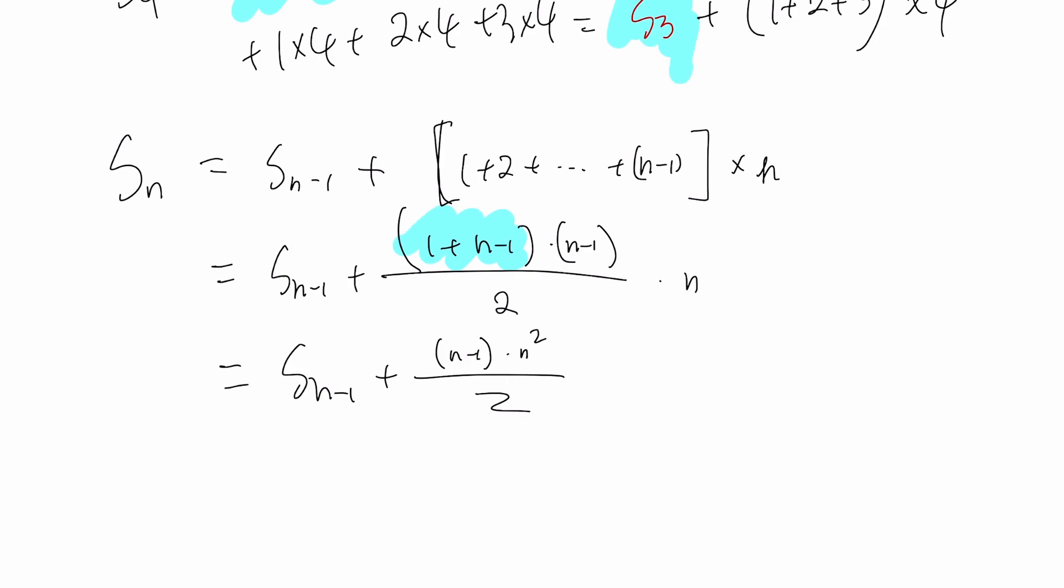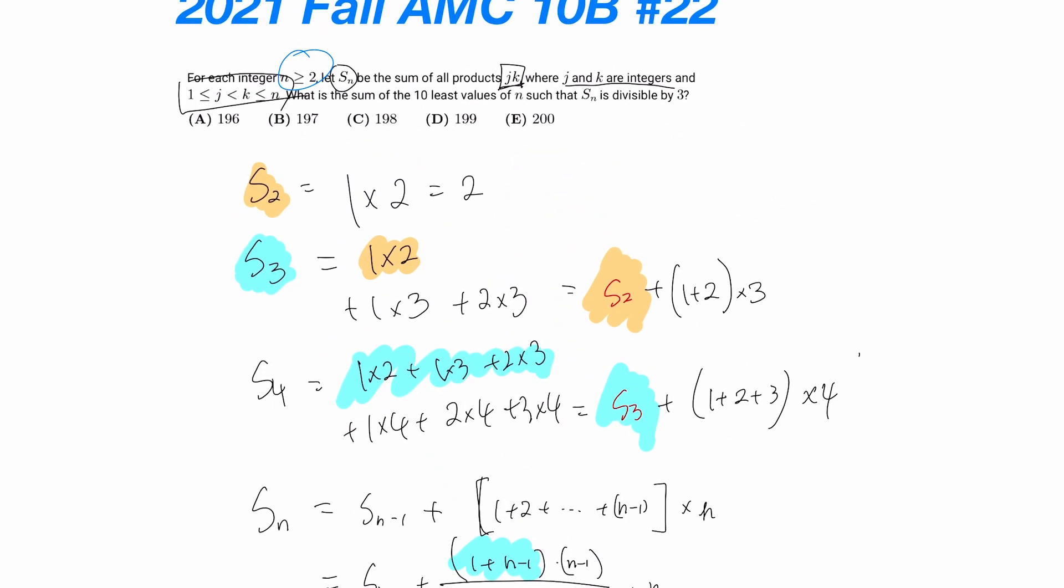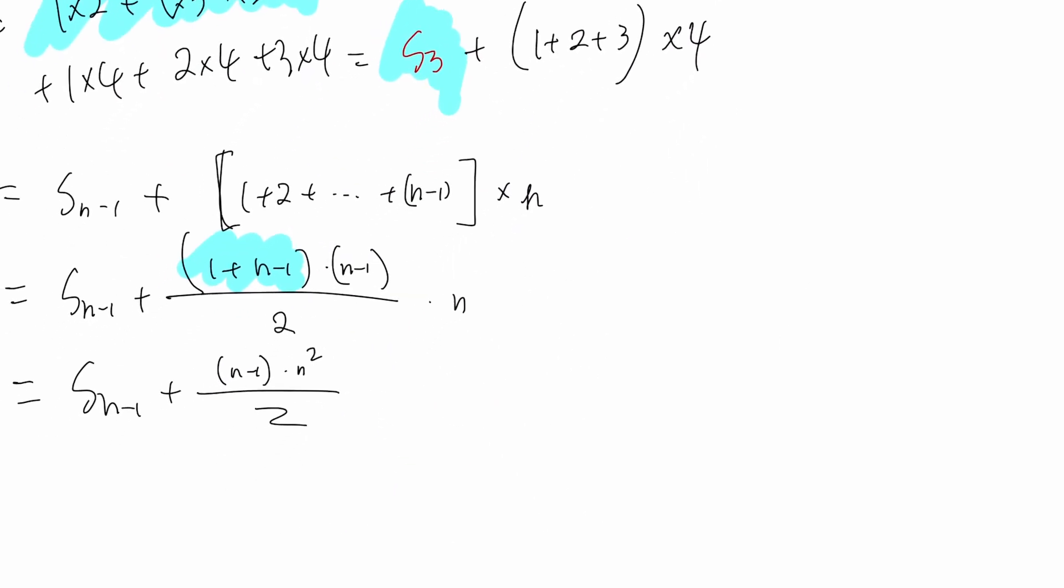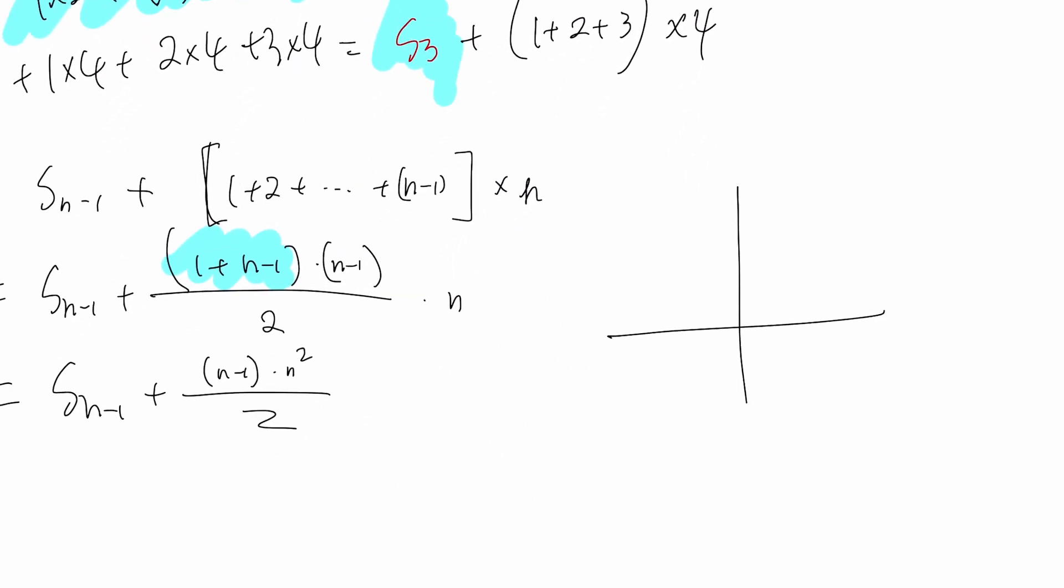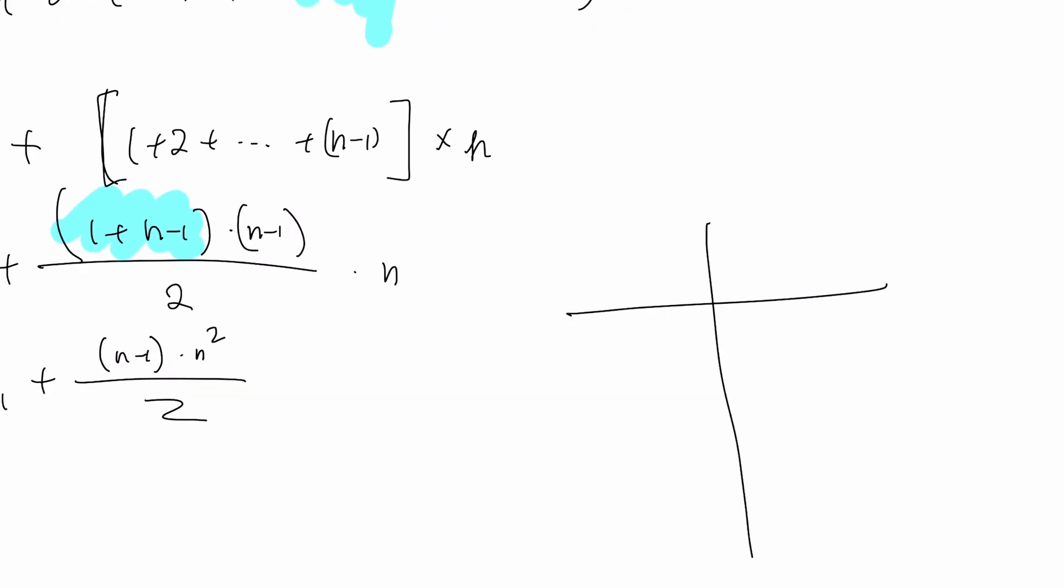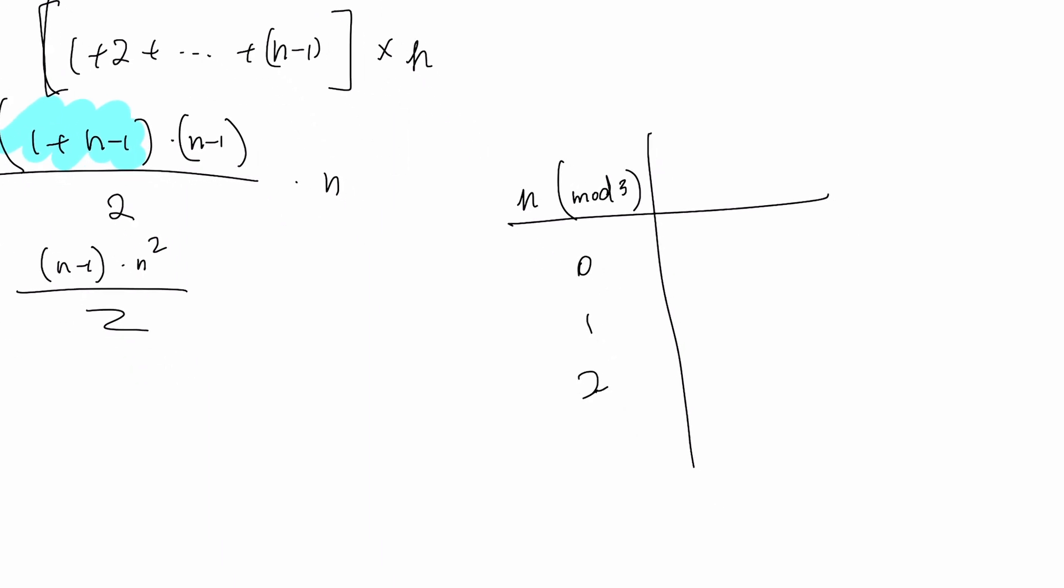Now, the problem asks us the conditions where S_n is divisible by 3. We need to find a relationship between this and 3. So let's try with mod 3. What happens when n is 0, 1, or 2?